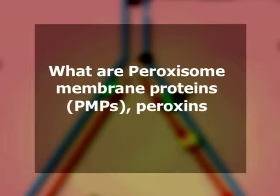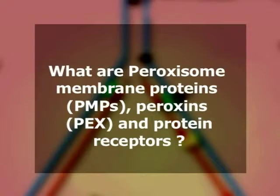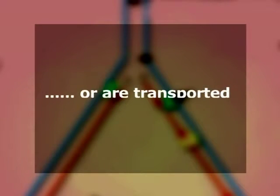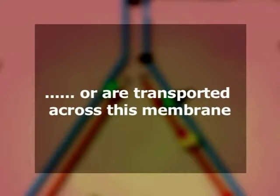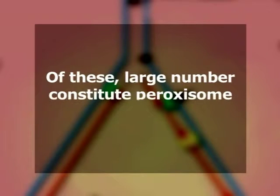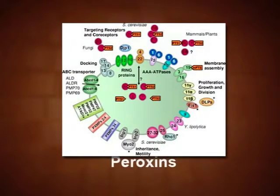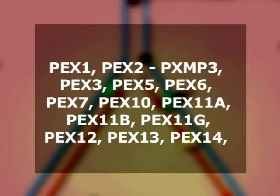Chemical composition, biogenesis and assembly of peroxisomes have been studied in detail in recent years. It is known that a number of proteins are associated with peroxisomes which help in a variety of functions. There are more than 100 proteins that are either targeted to the peroxisomal membrane or are transported across this membrane. A large number constitute peroxisome membrane proteins (PMPs), and at least 32 known peroxisomal proteins called peroxins participate in the process of peroxisome assembling.